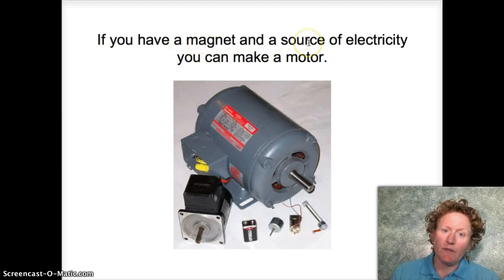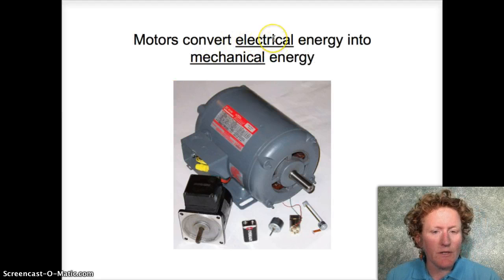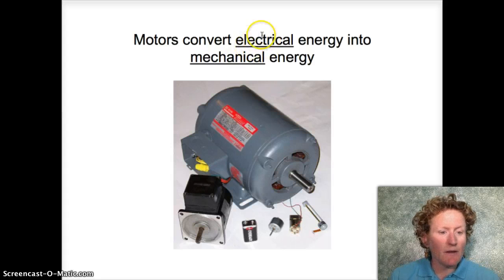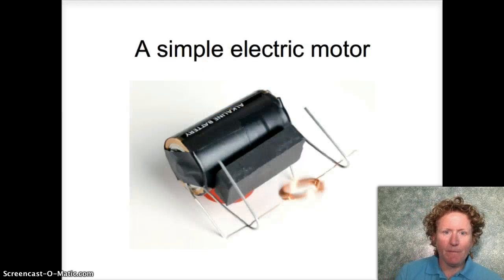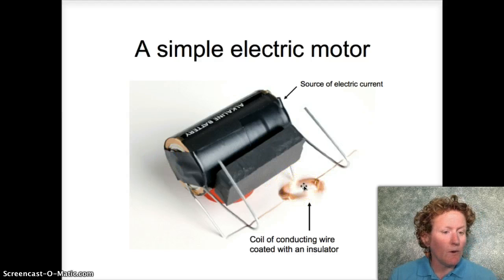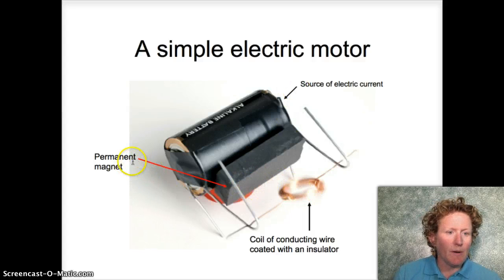If you have a magnet and a source of electricity like a battery, you can make a motor — you'll need a couple other parts as well. Motors convert electrical energy, like that from a battery or what comes out of the wall, into mechanical energy. Think of your blender: you have to convert electrical energy into mechanical energy to grind up bananas for your smoothie. Here's a simple electric motor from the lab. You need a source of electric current, a coil of conducting wire coated with an insulator, and a permanent magnet.